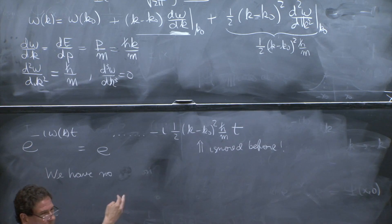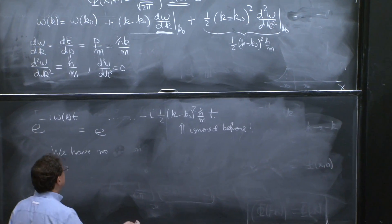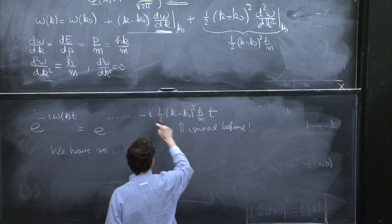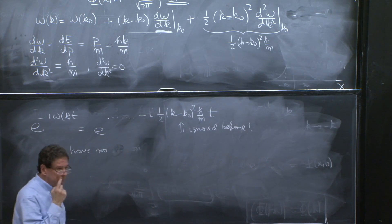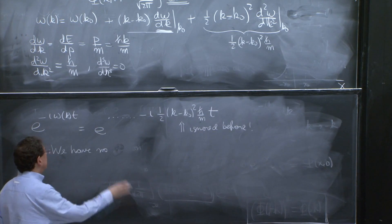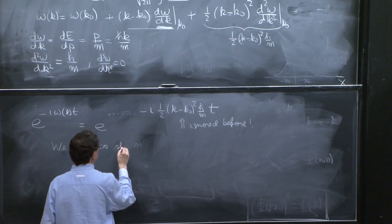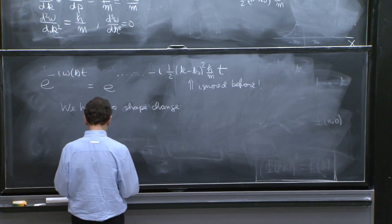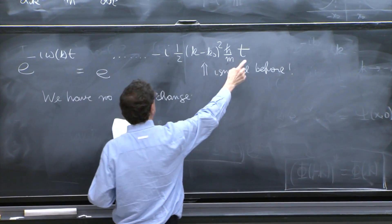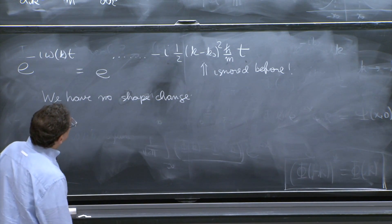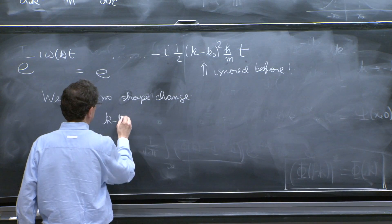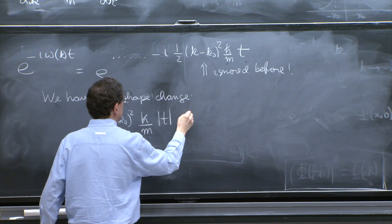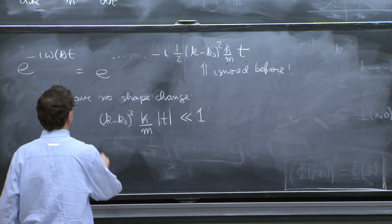Let's imagine you started with a packet at some time t equals 0, and then you let time go by. There's some numbers here, and time is increasing. At some point, this phase is going to become unignorable and it's going to start affecting everything. But we have no shape change, or no appreciable shape change, as long as this quantity is much less than 1. So as long as k minus k0 squared h bar over m absolute value of t is much less than 1, no shape change.